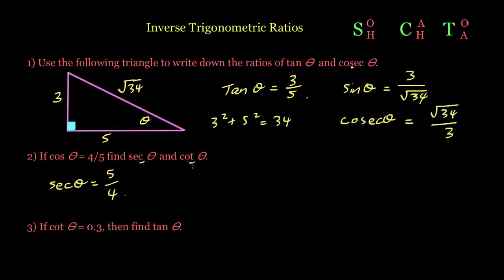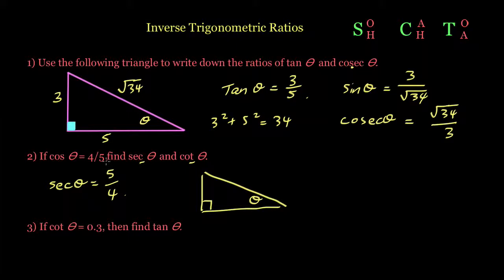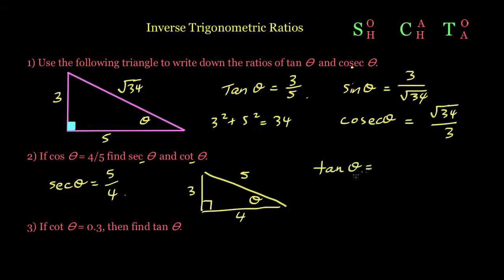The third letter of cot is 'T', so we need tan theta first. Drawing a right-angle triangle with theta placed in one corner: cos theta = 4/5 means adjacent is 4 and hypotenuse is 5. Using Pythagoras to find the opposite side: √(5² − 4²) = √9 = 3. So tan theta is opposite over adjacent, which is 3 over 4, and therefore cot theta is 4 over 3.